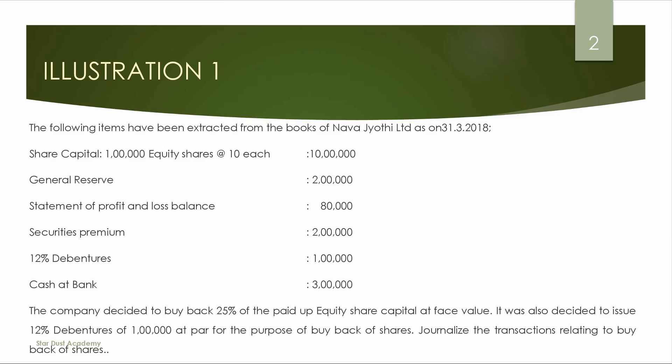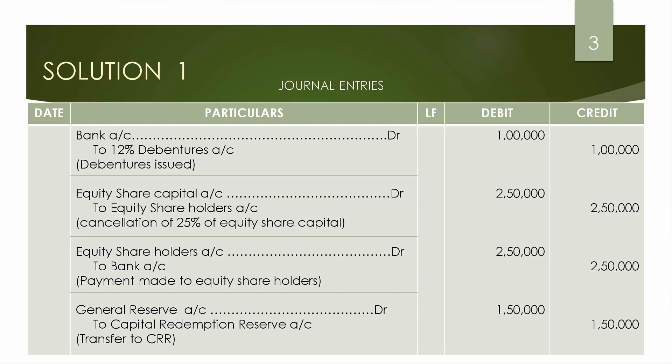We need to journalize the transactions related to buyback of shares — the general journal entries. For the debenture issue, we collect the cash amount. The entry is: Bank account Dr to 12% Debentures account. We receive the amount of 1 lakh from the debenture issue.